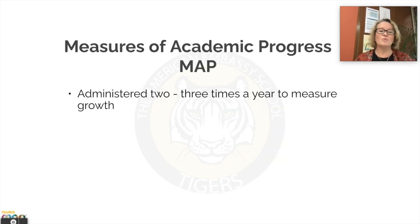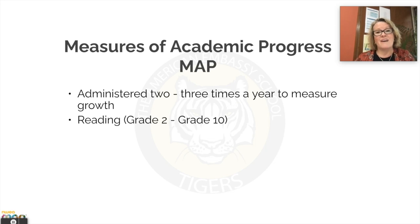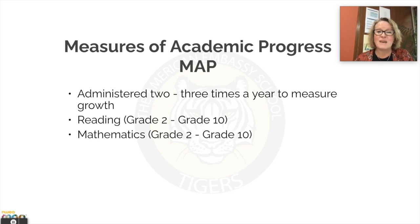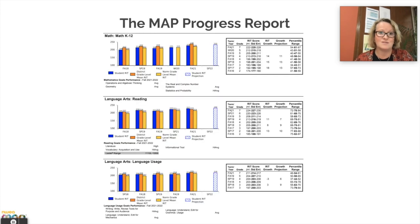When you get the MAP assessment, we want you to know that we will be giving it between two to three times this year to measure that growth. We have an assessment in reading, which was given to our grade two through ten students. We have an assessment in mathematics, which was also given to our grade two through ten students. And then language usage, which is more around grammar, given to our grade three through ten students.